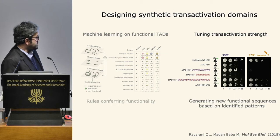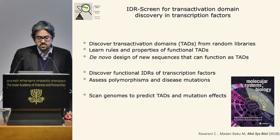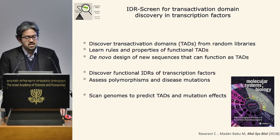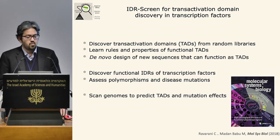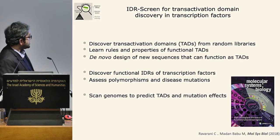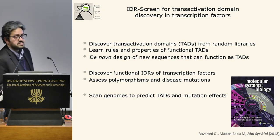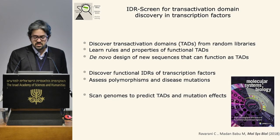By analyzing all properties enriched in naturally occurring transactivation domains compared to random sequences, we could design simple sequences with transactivation activity and tune its strength by adjusting specific parameters. Using IDR screen, we identified transactivation domains from random libraries, learned the properties that confer functionality, and designed de novo sequences that function as transactivation domains. The approach can also infer functional effects of polymorphisms and disease mutations, and scan genomes to identify likely transactivation domains in other proteins.